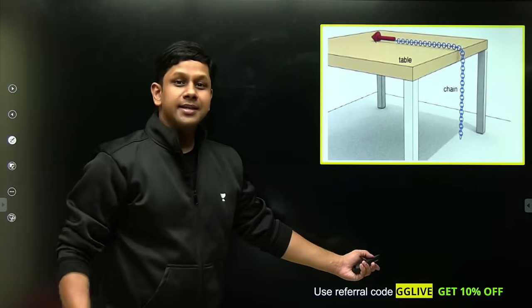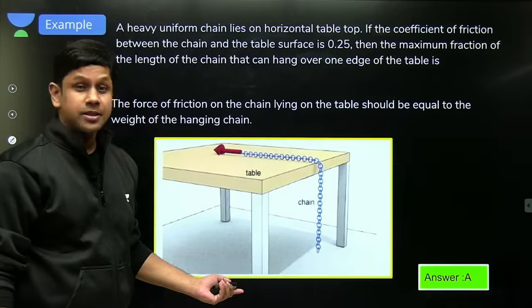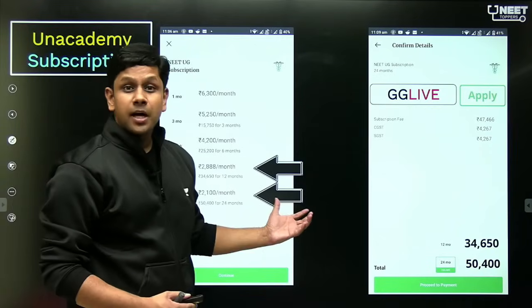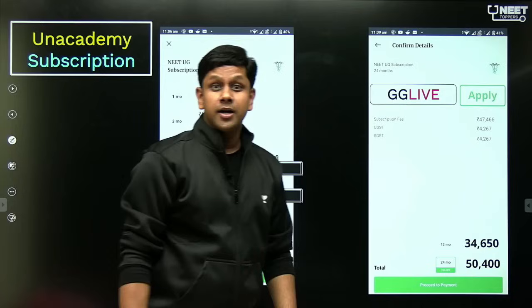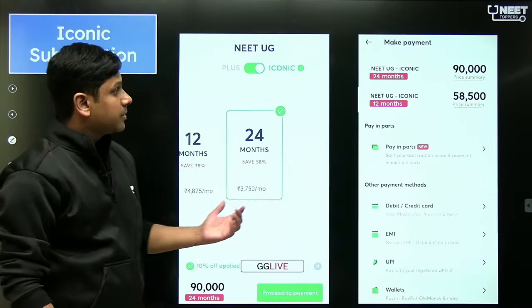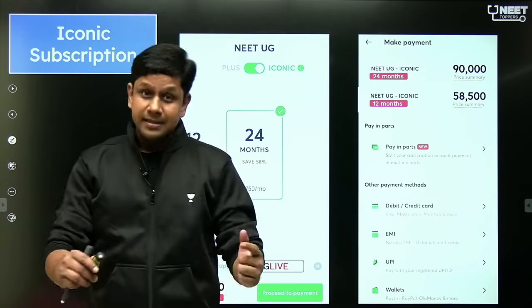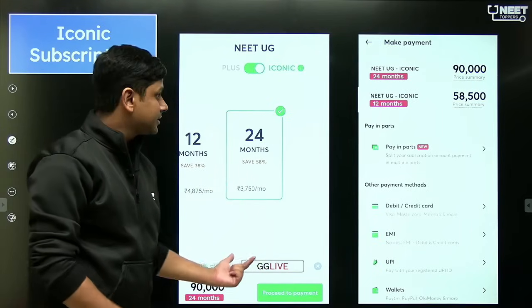And yes, before leaving, you can use GGLIFE code on Unacademy subscription to get maximum discount. You'll get 10% discount. And along with that, you have the plus option where it's 34,650 for one year, 50,400 for two years, and in iconic it's 58,500 for one year, 90,000 for two years. So using GGLIFE code you can get maximum discount.